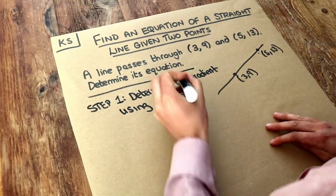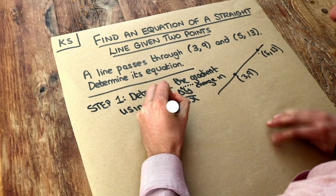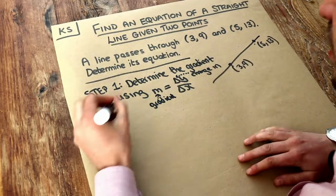So do you remember that the triangle just means change in and the gradient is m. So we find the gradient using change in y over change in x which we'll do in a second.